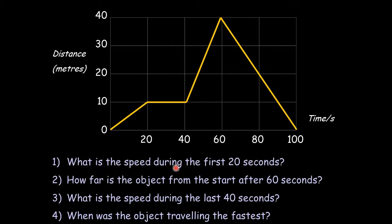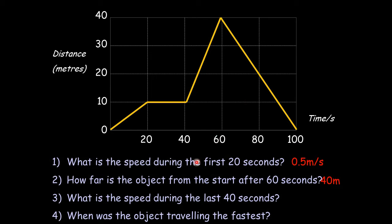Here's a typical question: what is the speed during the first 20 seconds? It's going from 0 to 10 in 20 seconds, so it's 10 meters in 20 seconds — the answer is 0.5 meters per second. How far is the object after 60 seconds? At 60 seconds it's 40 meters away. The speed during the last 40 seconds: change in distance is 40 meters in 40 seconds — 1 meter per second.